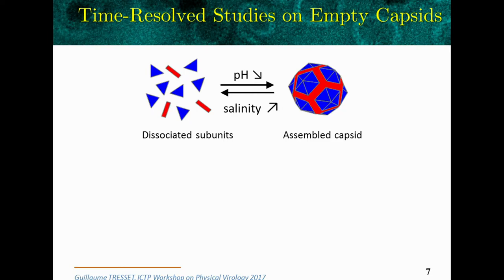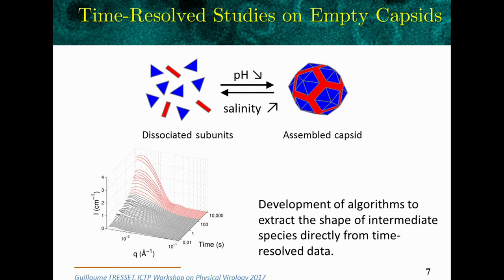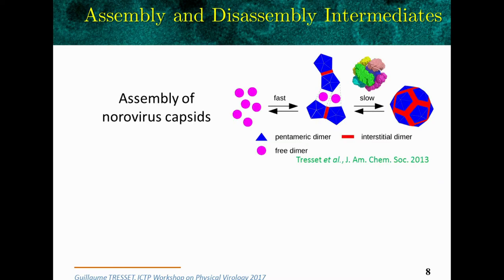We have already performed time-resolved studies on empty capsids. We mix the subunits with a buffer solution that lowers the pH or increases the salinity, and spontaneously the capsid self-assembles. We collect scattering intensities as a function of time and extract structural information by assuming a certain kinetic model. For example, with norovirus capsids we identified an important intermediate: starting from three dimers in solution, very fast an intermediate of two pentamers of dimers forms, which slowly finishes as empty capsids.